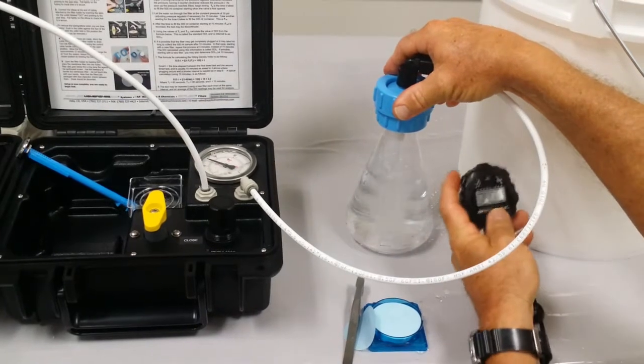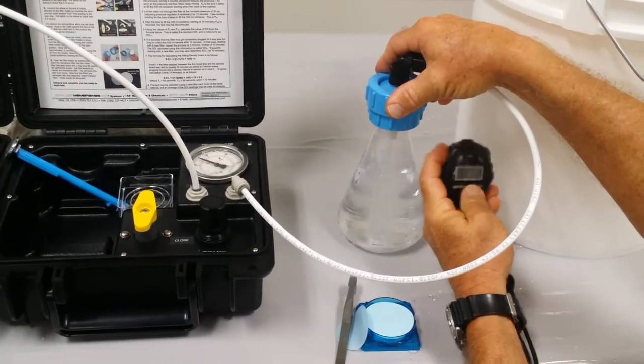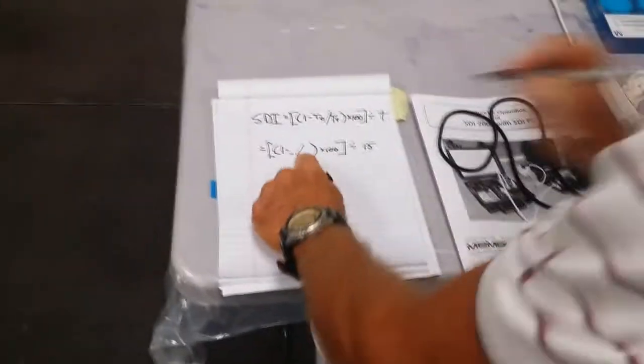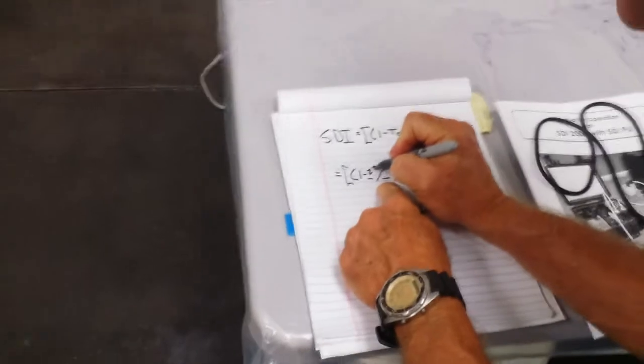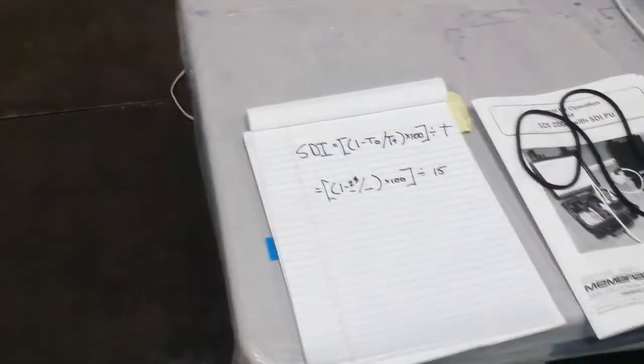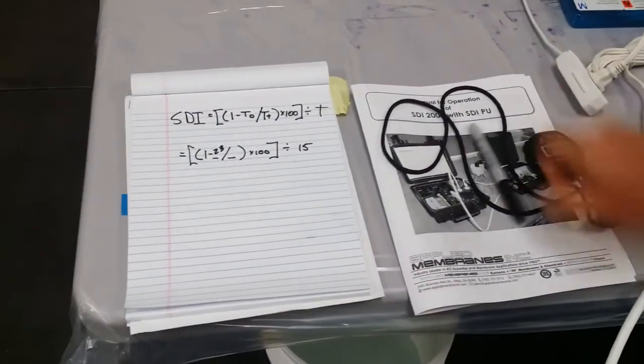And we're right at, click it, 23 seconds. So we'll take that 23 seconds, plug it into the formula over here. The first number, that's the missing, and then we'll come back here in 15 minutes.